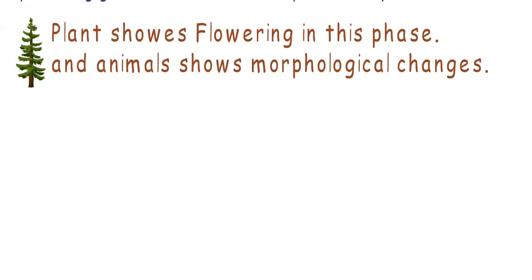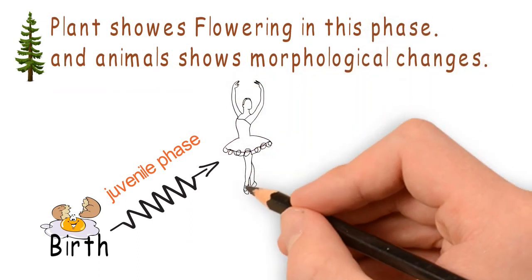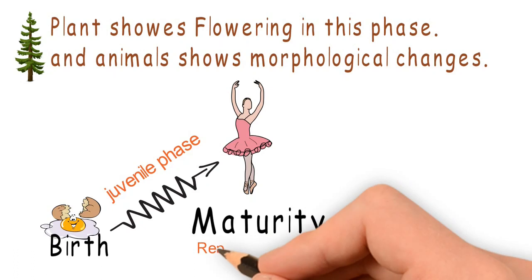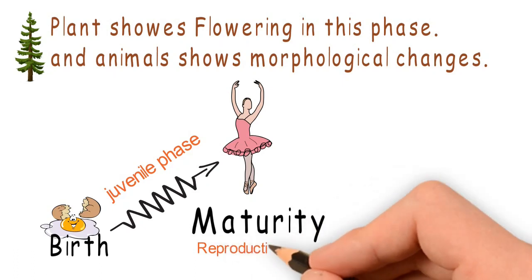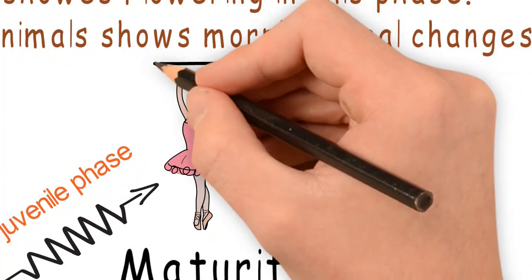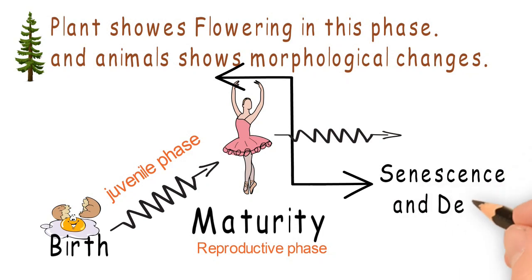Let's understand this: the lifespan from birth to maturity is called juvenile phase, and at maturity it is called reproductive phase. The organism is reproductively active in this phase. Then senescence and death is the last phase of life.